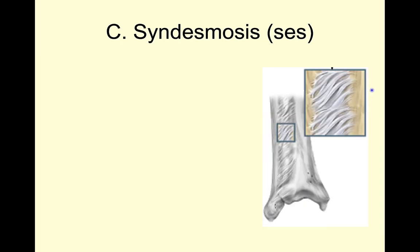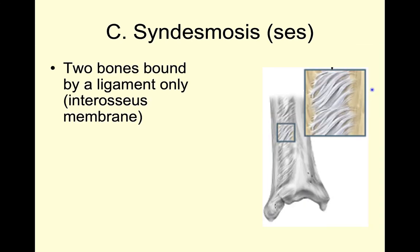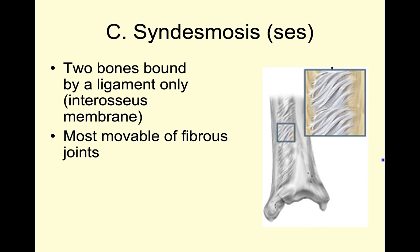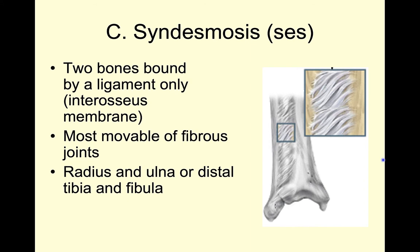Last is our syndesmosis. Here we can see that we are holding these two bones together by this interosseous membrane, so they have some movement. They're the most movable of our fibrous joints, and we see this between our radius and ulna as well as our tibia and fibula.